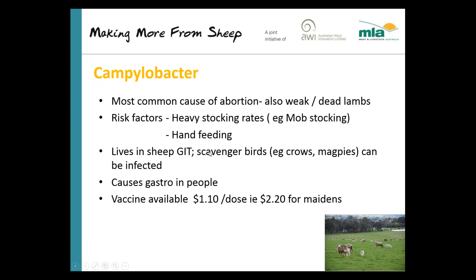Campylobacter does cause gastroenteritis in people, though the specific abortion strains may not be commonly identified. There are two main strains that cause abortion: Campylobacter foetus foetus, which has been known for a while, and Campylobacter jejuni, which appears more commonly in Tasmania and is more likely to be associated with gastroenteritis.